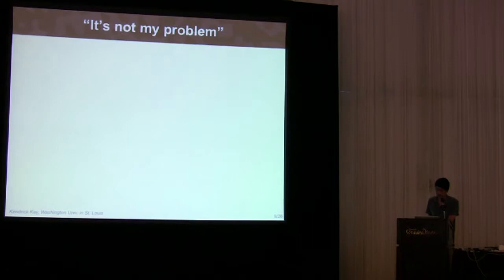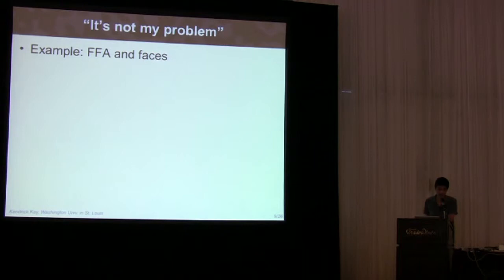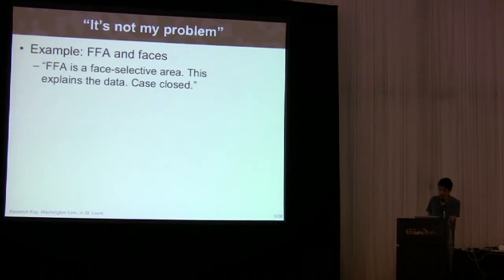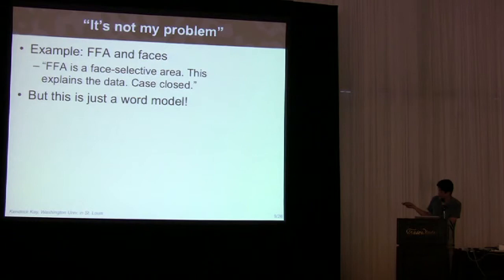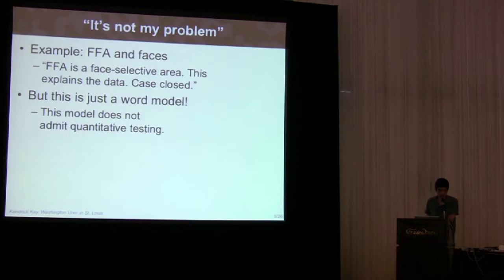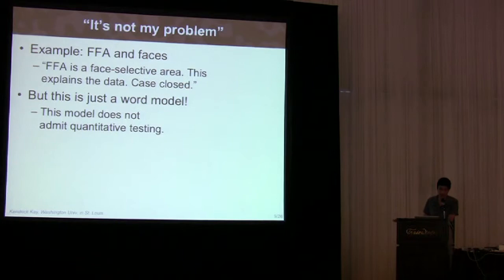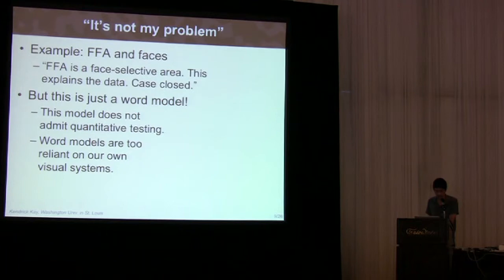Now, even if you think it's a good idea to develop these models, maybe you're thinking it's not your problem. I'm going to try to disabuse you of that notion, and I'm going to use this simple example of FFA, or fusiform face area. Now, it may seem like we understand this area. We know how to drive it. It's face-selective. This seems to explain observed data. Case closed. Let's not worry about anything else. I think there's two issues with this kind of word model explanation. The first is it's not quantitative, and we can't really test this. For example, what's the prediction for a stimulus that's not clearly a face and not clearly a non-face?